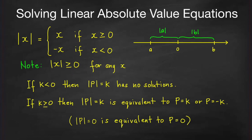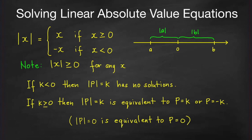Geometrically, absolute value gives you the distance of the number from the origin, or from 0, on the real line. So if b is positive, this distance is the absolute value of b. If b is equal to 5, the distance of that number from 0 is equal to 5. If a is negative, like negative 3, then the distance of negative 3 from the origin is 3 units to the left. So that distance, 3 units, is the absolute value of negative 3.